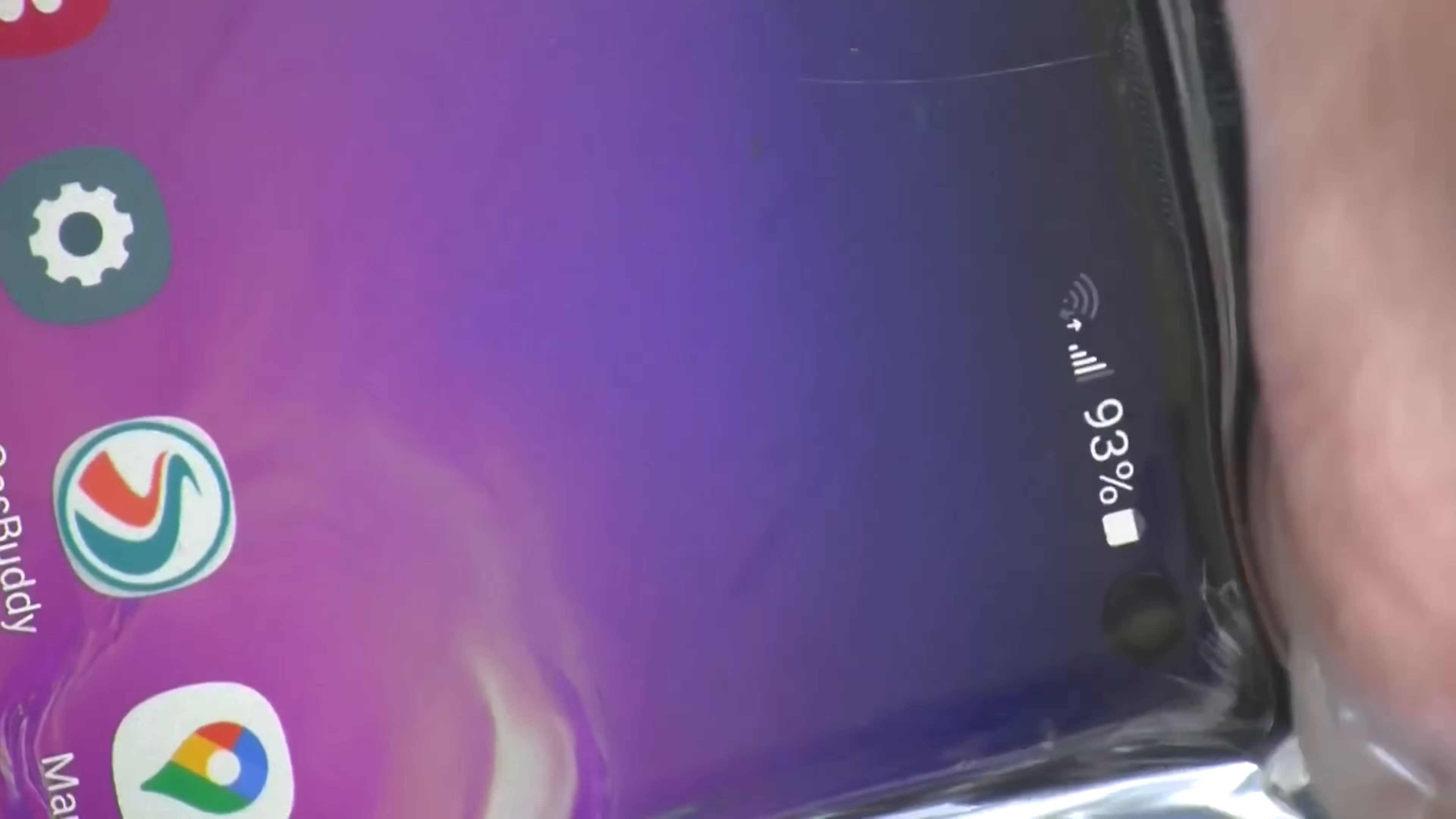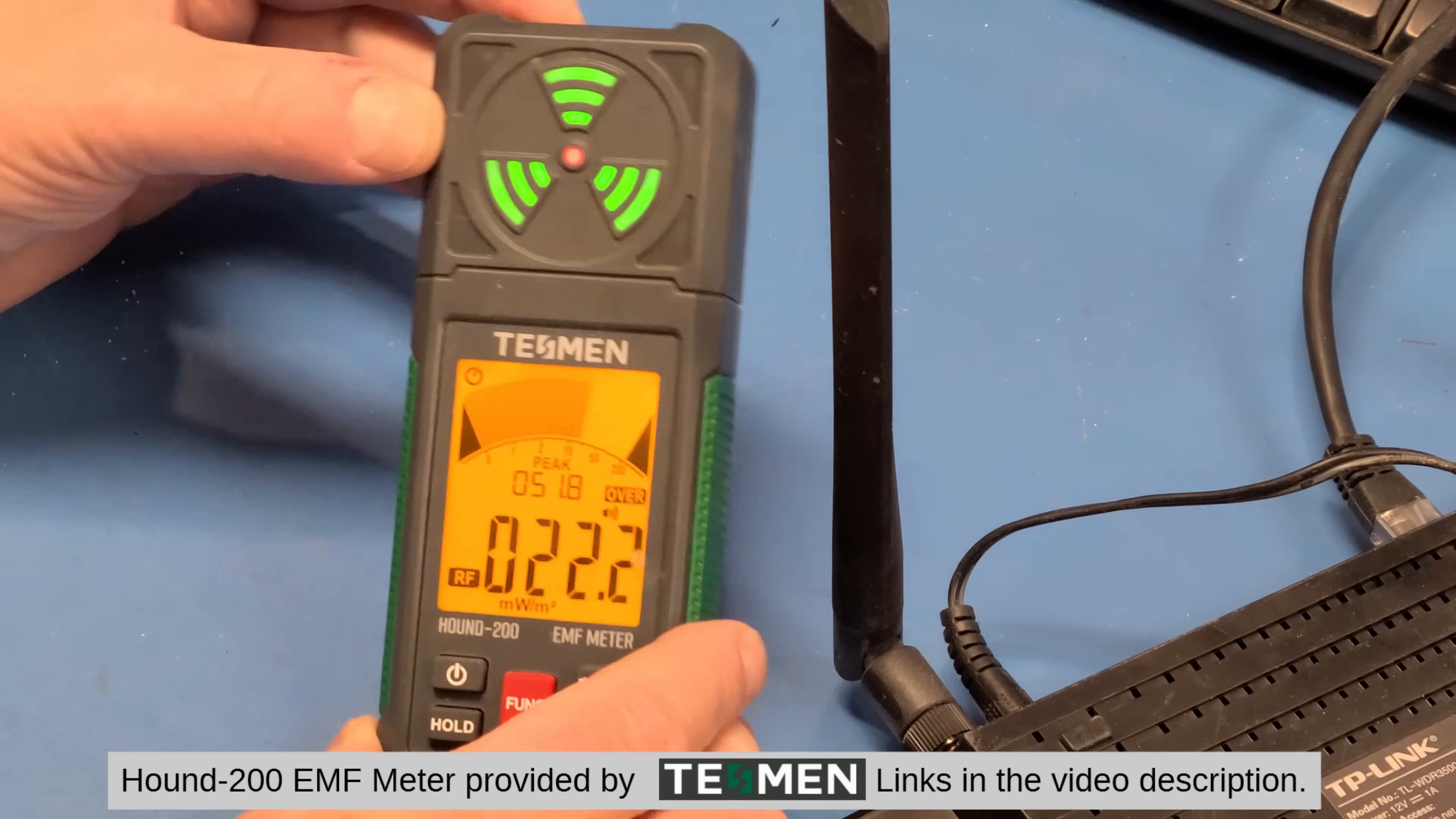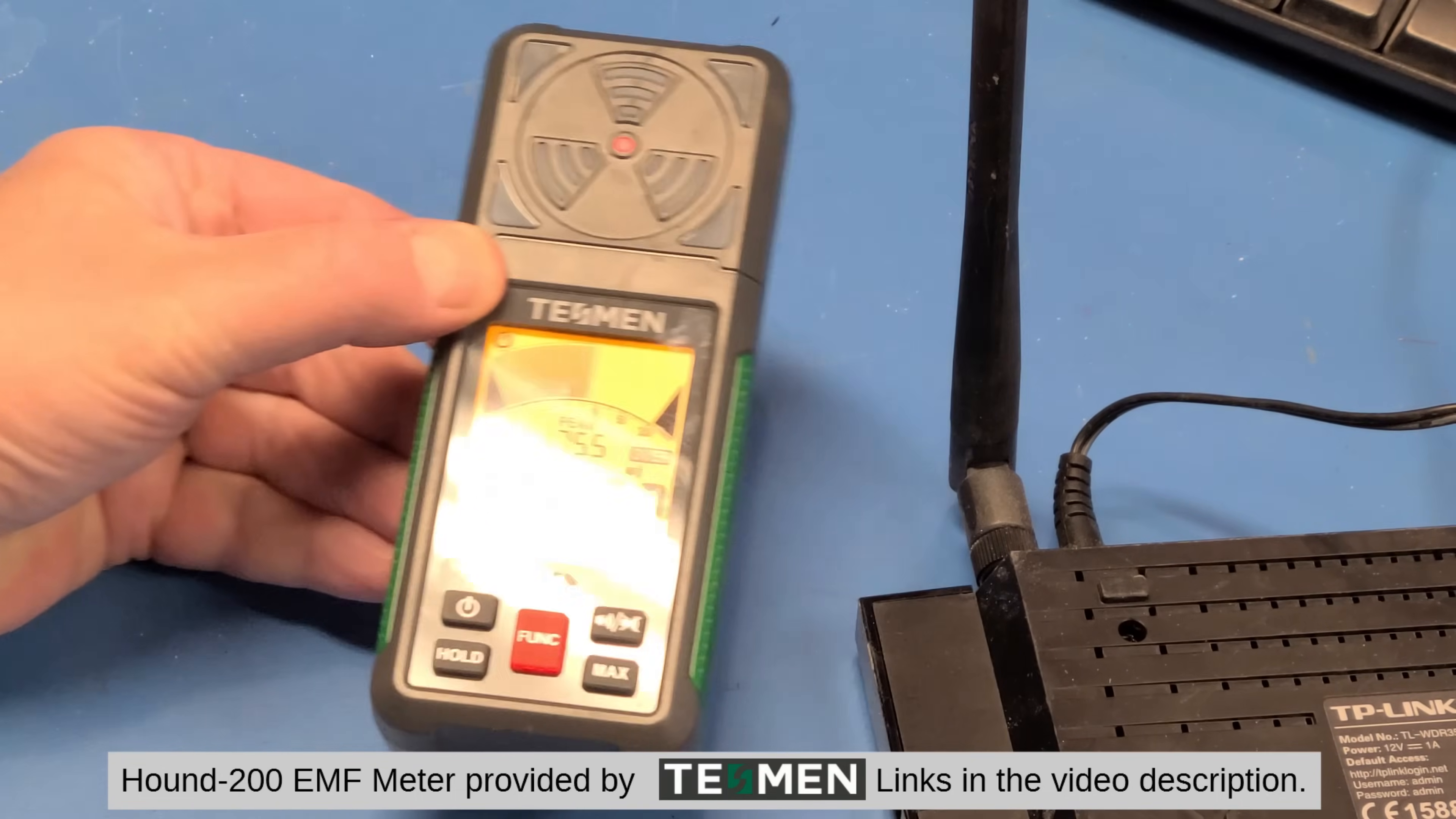And I also did a demo where I put a cell phone in a plastic bag, and we submerged it in a cooking Pyrex container. And sure enough, we saw the RF signal going to the cell phone disappear. Well, since I have this nifty EM sniffer that Tesman sent me a while ago, I thought it would be fun to try a similar experiment taking advantage of the sniffer's much nicer signal strength display.